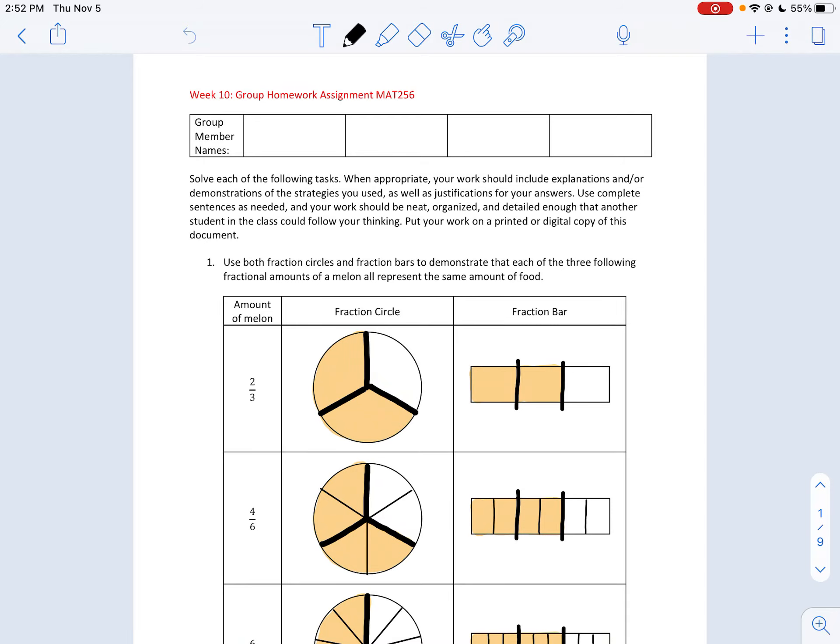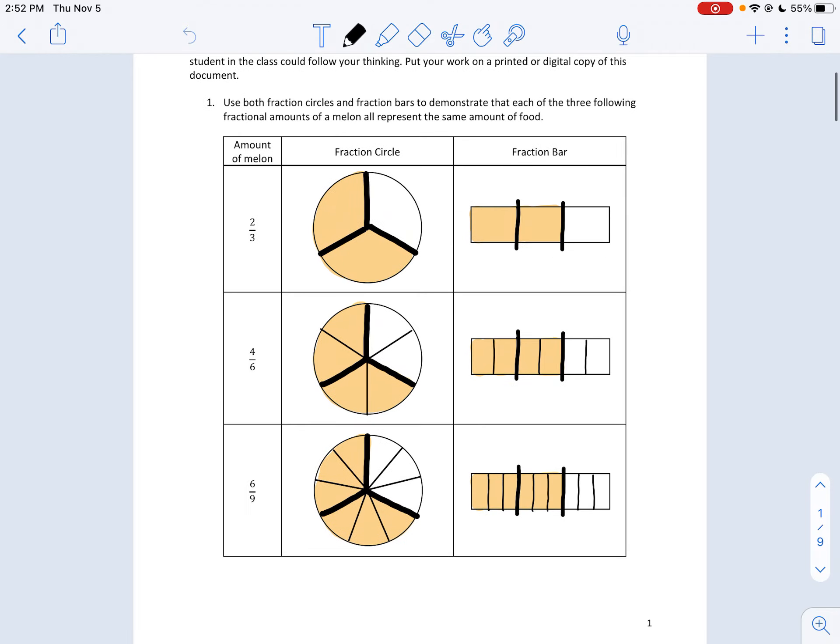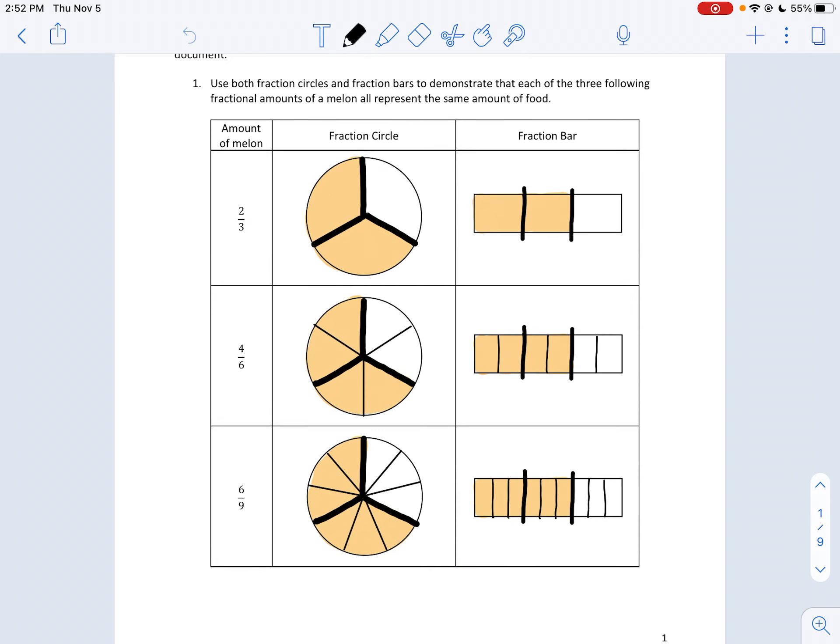Hello class. I'm going to go over the week 10 solutions. For question 1, I was hoping that people would use these visuals to help a student understand that the amounts two-thirds, four-sixths, and six-ninths of a whole all represent the same amount.